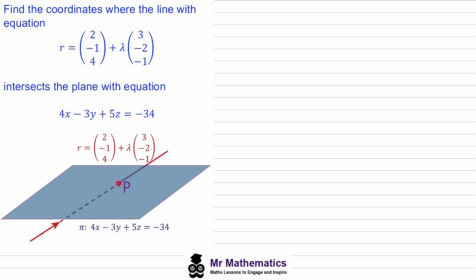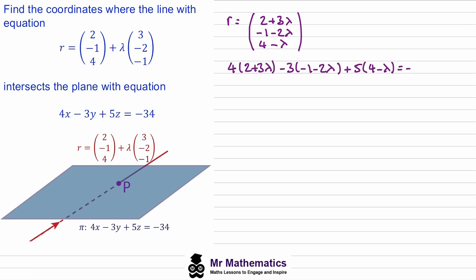The point of intersection is labelled point P. It's important to understand that any point along this line will have a general x-coordinate of 2 plus 3λ, a general y-coordinate of negative 1 minus 2λ, and a general z-coordinate of 4 minus λ. At point P we can substitute these x, y, and z values into the Cartesian equation, and this will all equal negative 34.